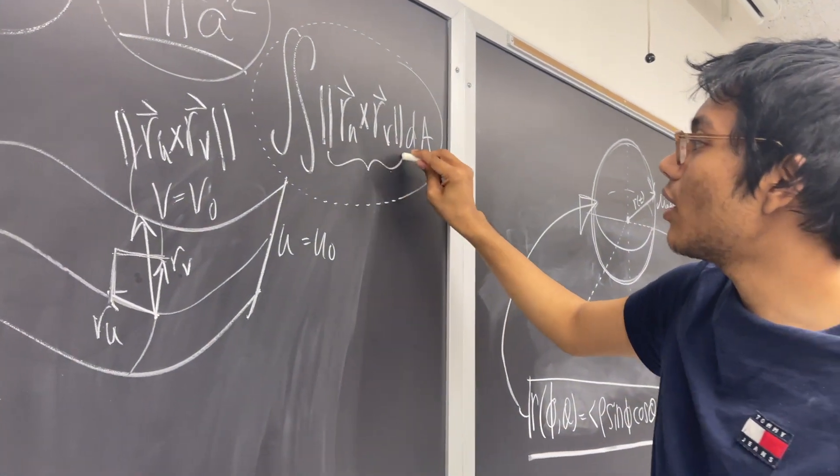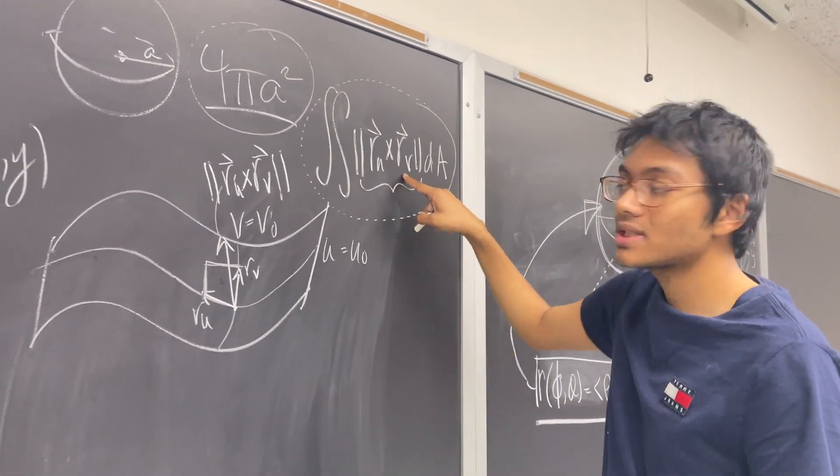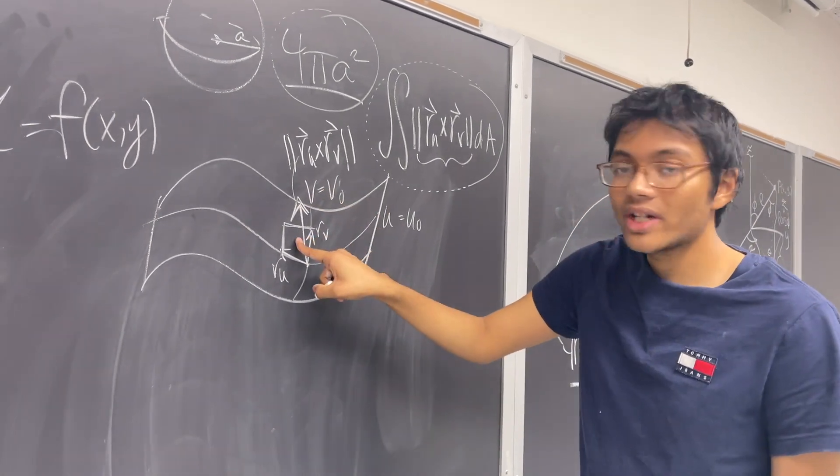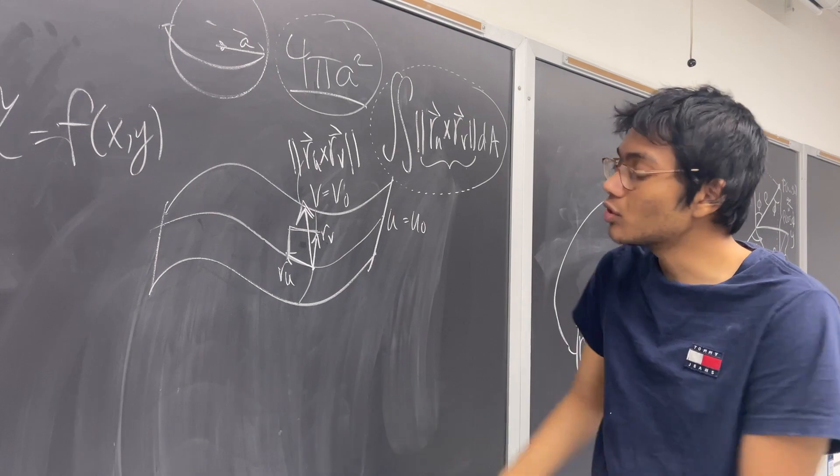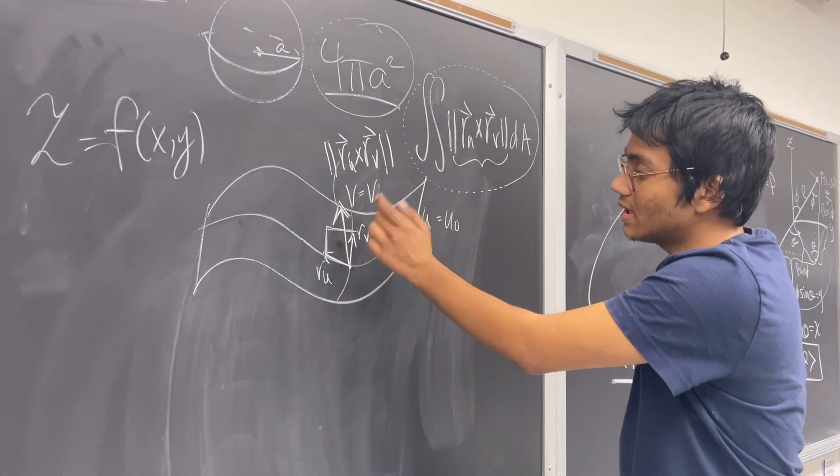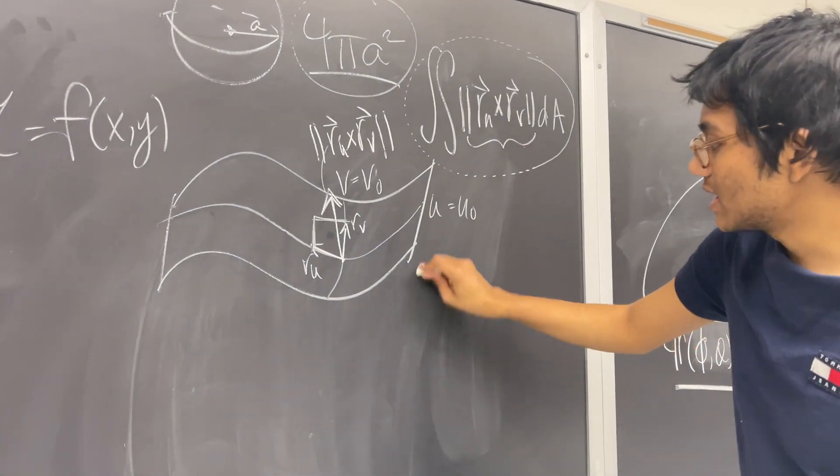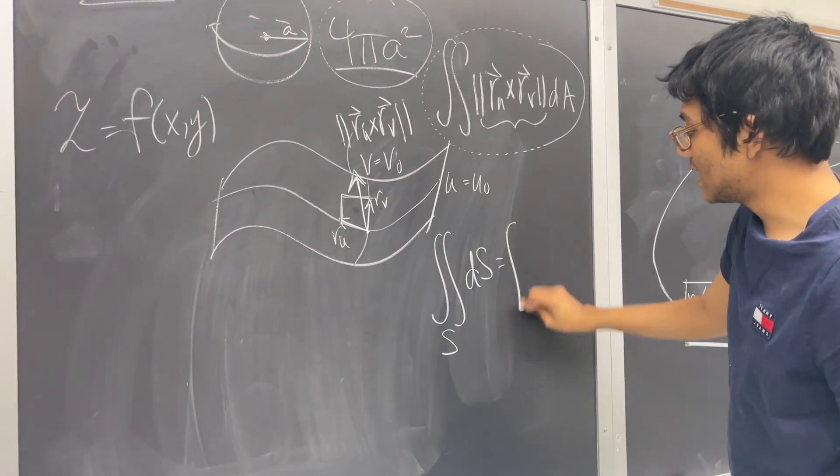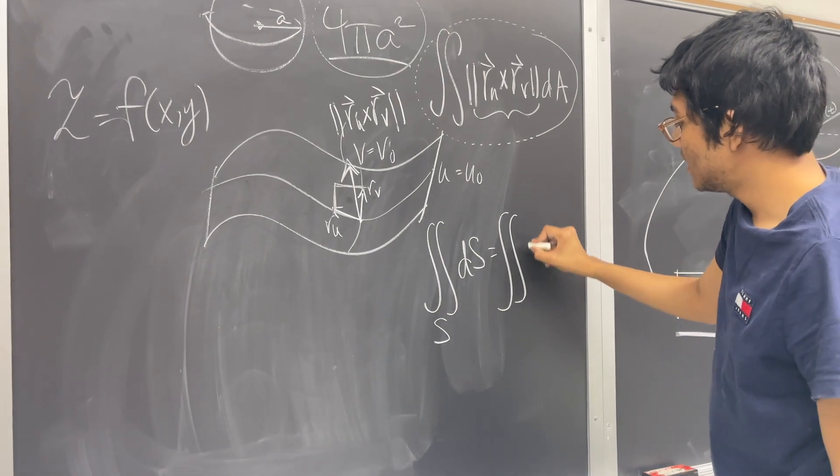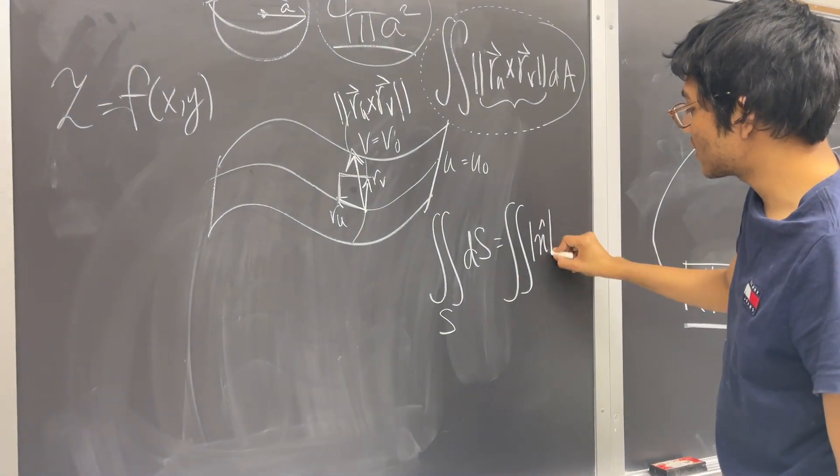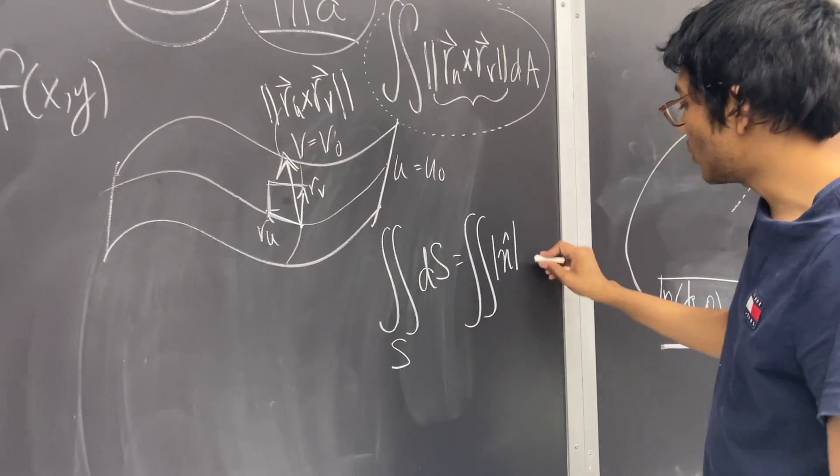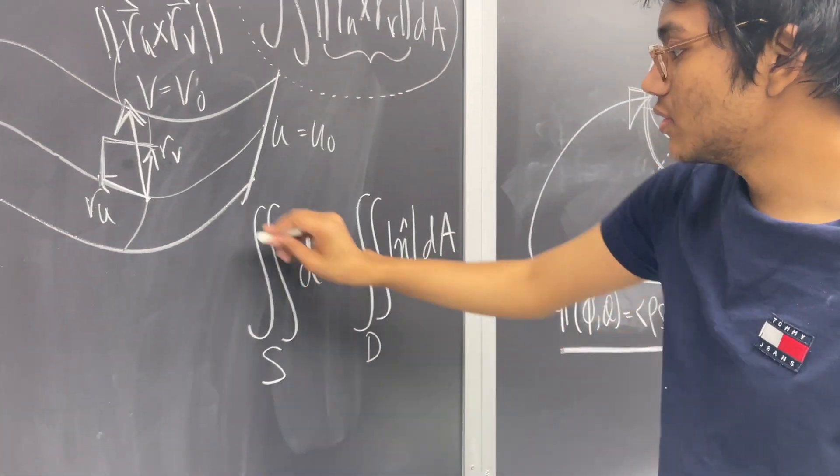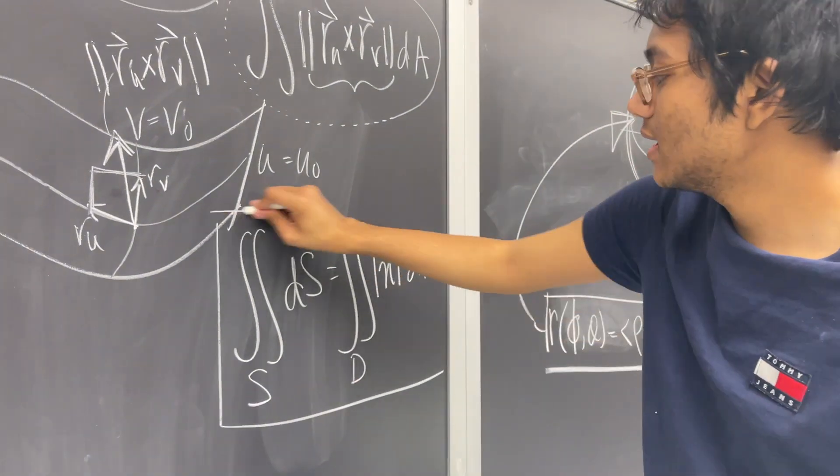So notice that r_u × r_v is none other than the normal vector. The normal vector. If I unitize this vector or normalize this vector, I'm going to get the normal vector here. So I can just write this. The surface area over some surface is nothing more than the magnitude of the normal vector at a certain point times the over the domain over which that surface is defined.